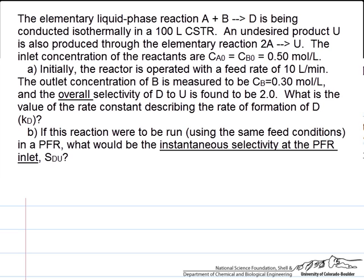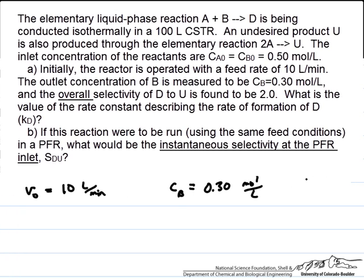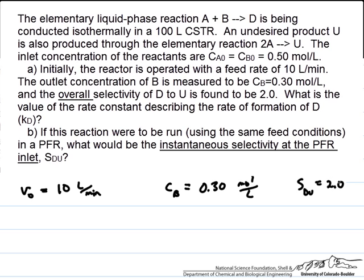We're given information about this reaction. The inlet volumetric flow rate — and therefore the outlet volumetric flow rate as well, assuming volume is conserved in this dilute system — is 10 liters per minute. The inlet concentrations are equal at 0.5 moles per liter. The outlet concentration of B is reduced to 0.30 moles per liter, and the overall selectivity of D to U is found to be 2.0. We are asked to find the rate constant KD.